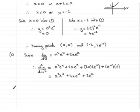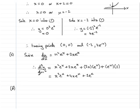Now for part d: determine the nature of the stationary points for the curve. All we need to do is substitute the x-coordinates of the turning points into d²y/dx². First, when x = 0.